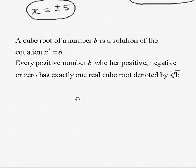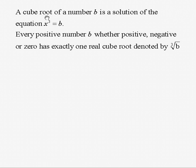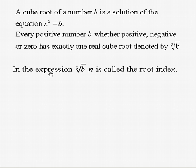That brings us to cube roots. The cube root of a number b is a solution to the equation x cubed equals b. Every number — whether positive, negative, or zero — has exactly one real cube root, denoted by this symbol. In the expression, the number n is called the root index. When it's not written, we think of it as the square root. When there's a 3, it's the cube root; a 4 means the fourth root, and so on.